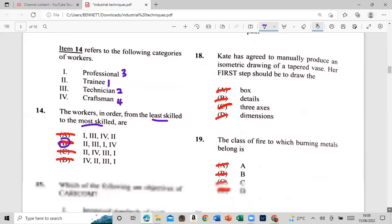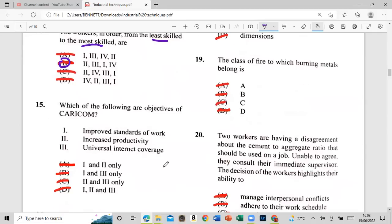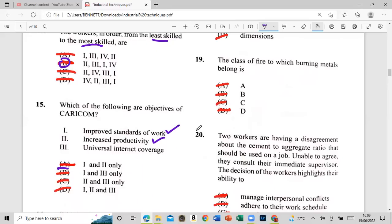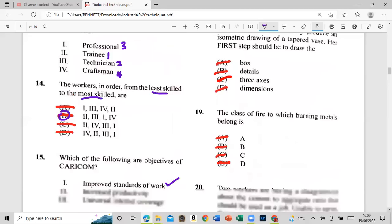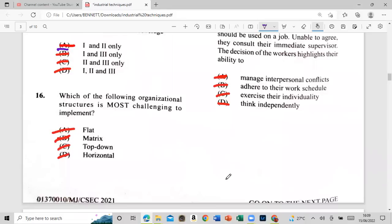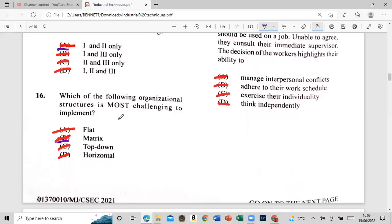15: which of the following are objectives of the character? A: improves standard of work. B: to increase productivity. Three: universal internet, corporate. Six: let's go straight to the answer for this one and two, right? So improve standards of work, don't please productive or universal internet focus of foolishness. All right guys, let's go, let's go, let's go. Hit the like button that now it's going to place it. Did that button. Number 16: which of the following are the additional structures is most challenging to implement? Is a flat matrix, top-down, or horizontal? And as it suggests, the matrix. Bad, bad movie that. All right, I think you probably know much matrix I'm here to see.